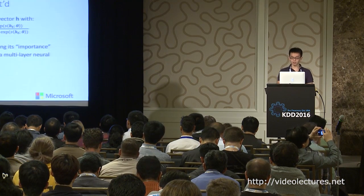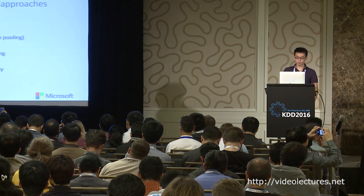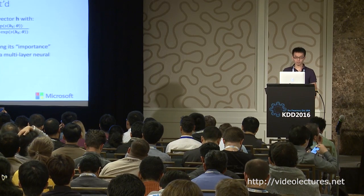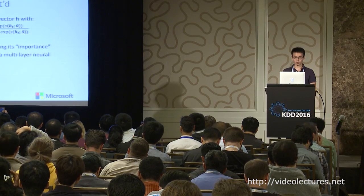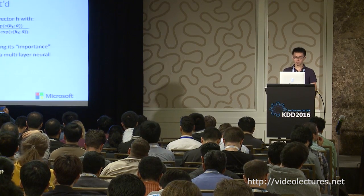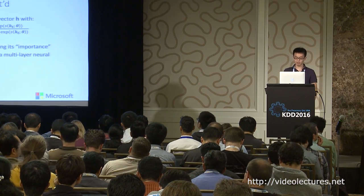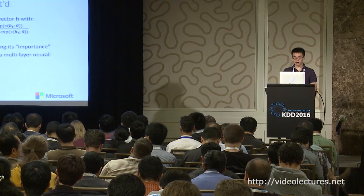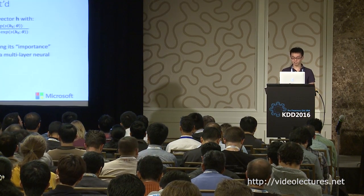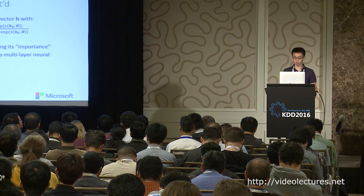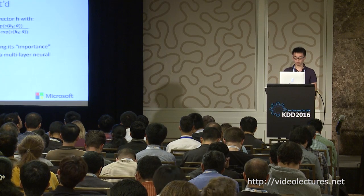To be more specific, here is the formulation of our attention-based pooling. The input is a sequence of vectors h_1 up to h_T. The final output, a single vector h, is a linear combination of h_t weighted by a_t. The attention net S is implemented with a multi-layer neural network, and its output is normalized into a probability distribution summing to one.